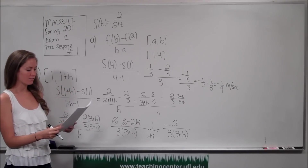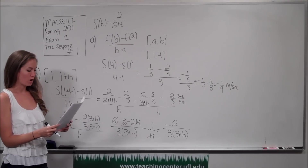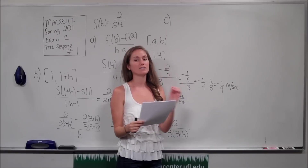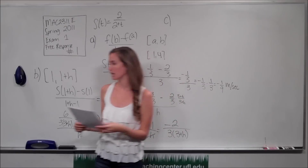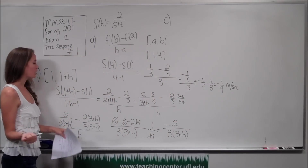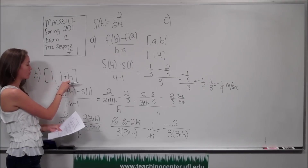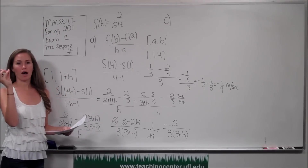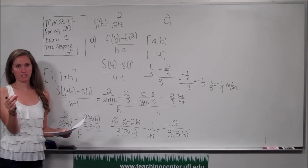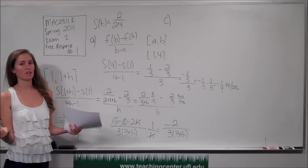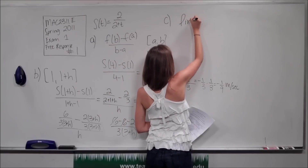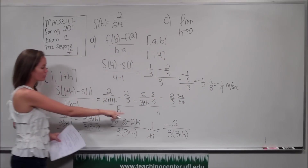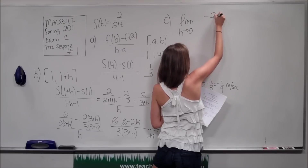Part c asks us to use a limit to find the velocity of the object at the instant t equals 1 and to include units. To find the instantaneous velocity we can use a limit of the average velocity. As h approaches 0, the interval 1 to 1 plus h shrinks to just the instant at 1 second, giving us the instantaneous velocity. So we take the limit as h approaches 0 of negative 2 over 3 times 3 plus h.